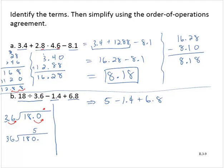Left to right, 5 subtract 1.4, well that's 5.0 subtract 1.4. Borrowing, bring down the decimal point, is 3.6. So that gives me then 3.6 plus 6.8.